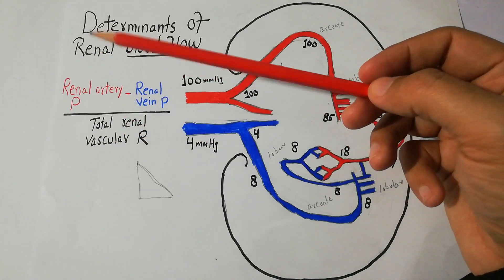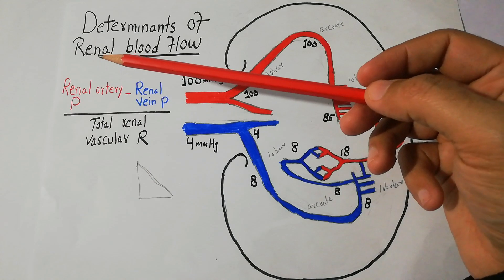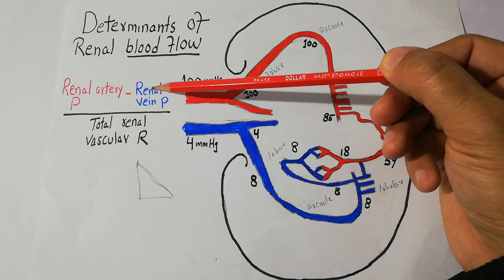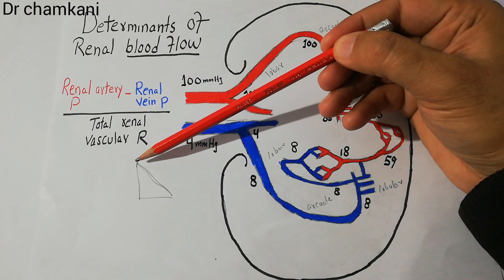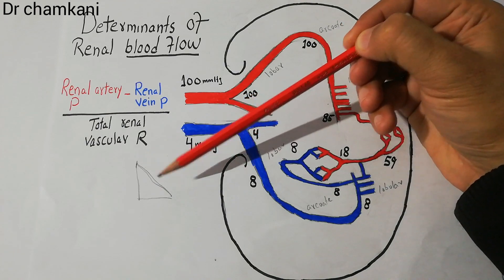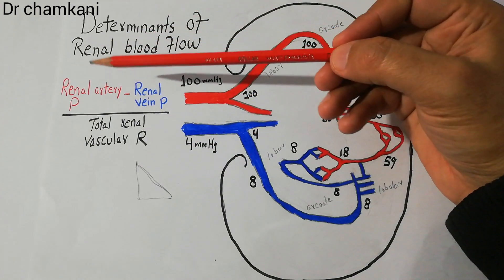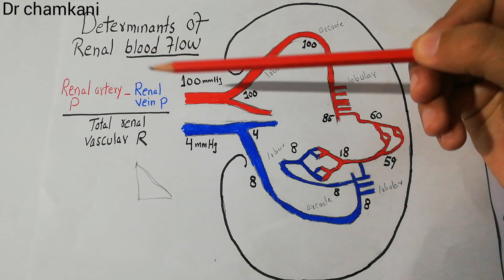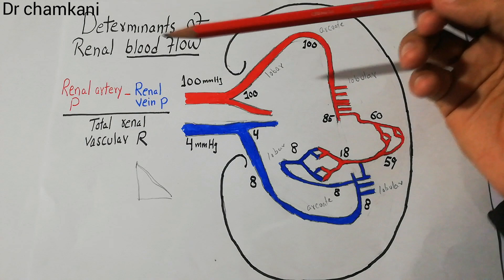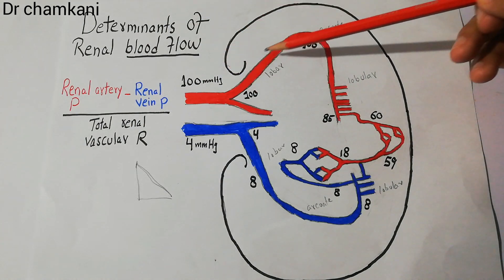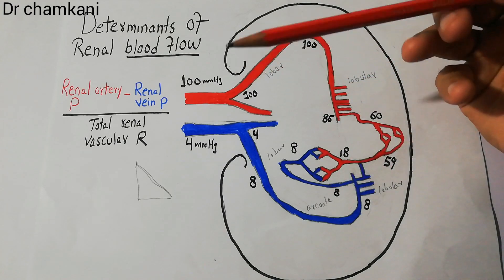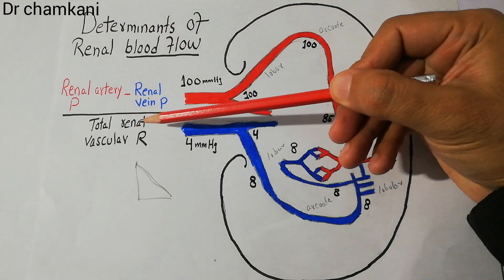The pressure gradient is determined by the pressure of blood in the renal artery minus the pressure of blood in the renal vein — similar to something flowing from the top of a hill to the bottom, where the gradient is between the top and bottom. This gradient is then divided by the total renal vascular resistance, which is the combined resistance at each and every point in the vasculature.